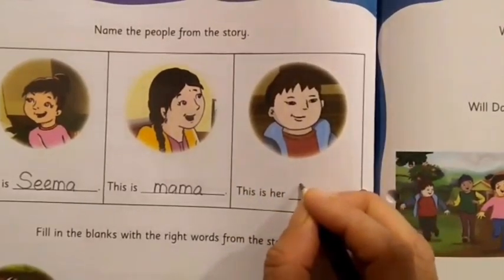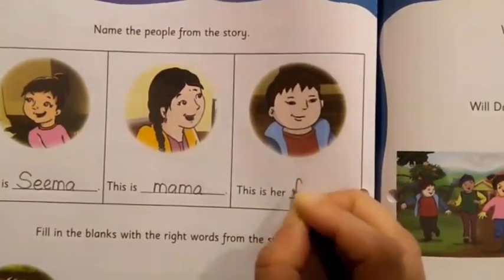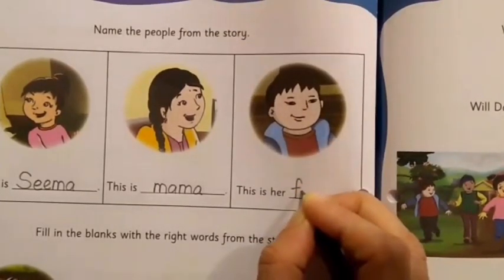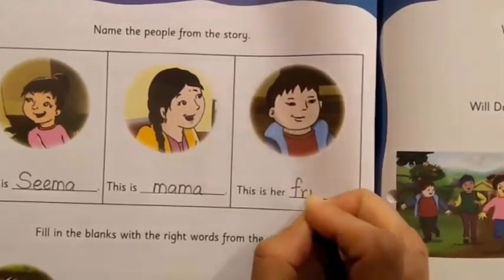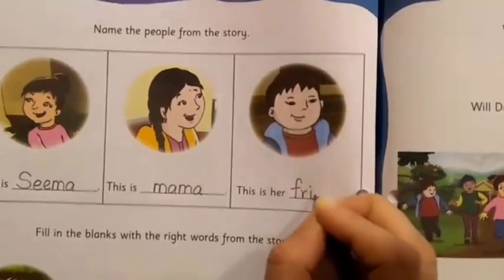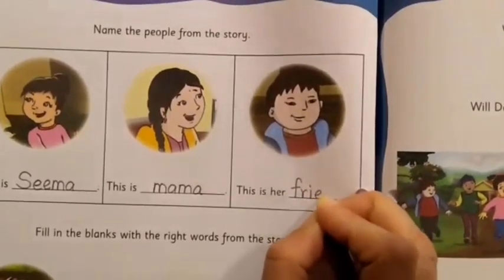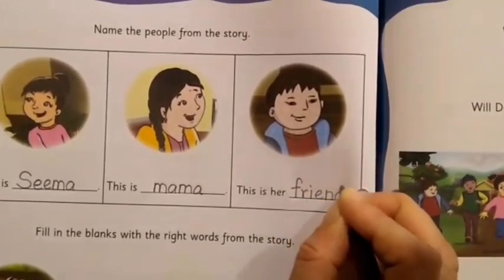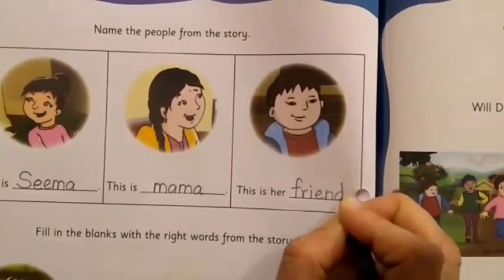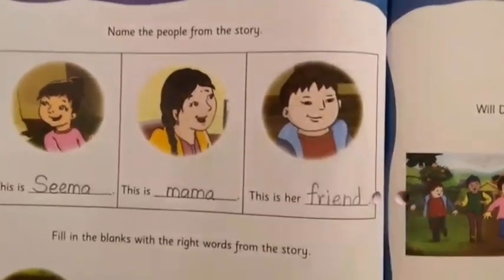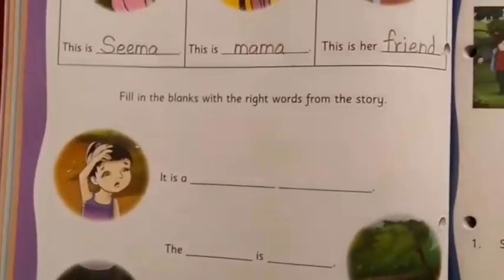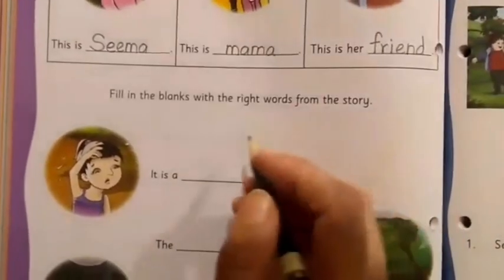So we are going to write the word friend here: F, small r-i-e-n-d — the word friend. Right, let us move on to the next.